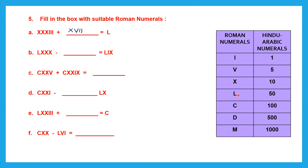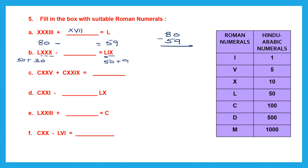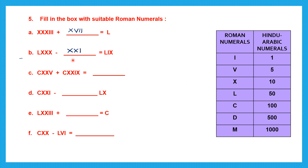Next: LXXX is 50 plus 30 equals 80, and the other side is LIX which is 50 plus 9 equals 59. So 80 minus 59 equals 21. We write 21 as 20 plus 1 — XX for 20 and I for 1 — giving XXI.